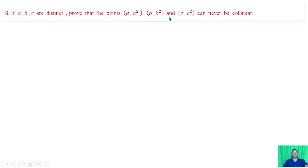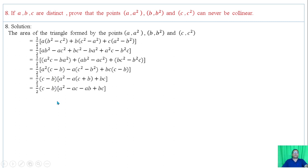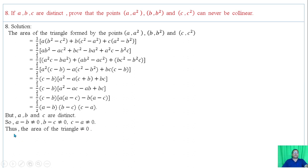Question 8: If A, B, C are distinct, prove that the given points can never be collinear. The area of the triangle formed by these points is half times the expression. Eliminating and arranging, we have the result. Since A, B, C are distinct numbers, A minus B is never zero, B minus C is never zero, and C minus A is never zero. Therefore the area of the triangle is never zero. Hence the given points can never be collinear when the points are distinct.